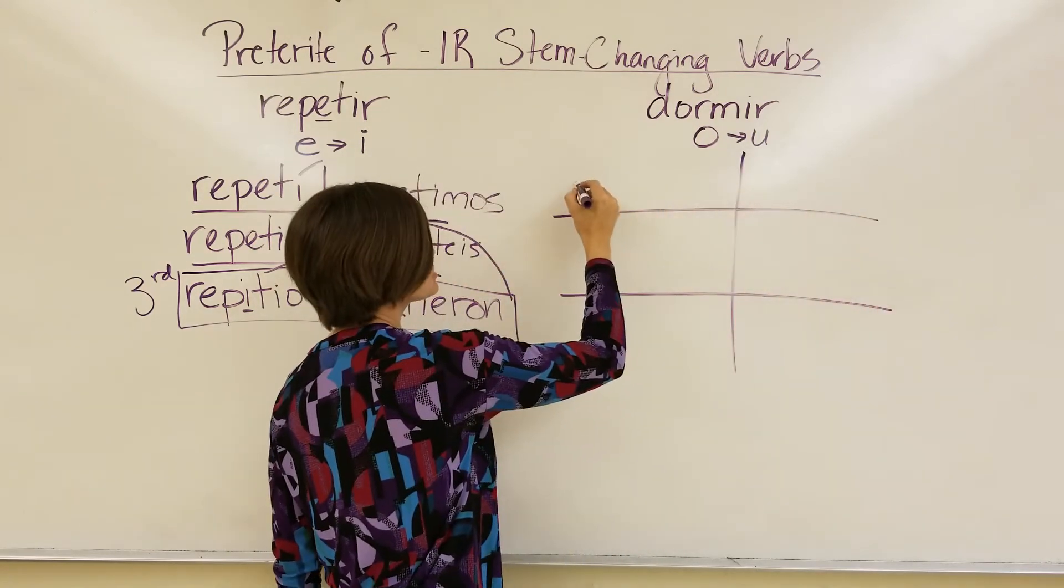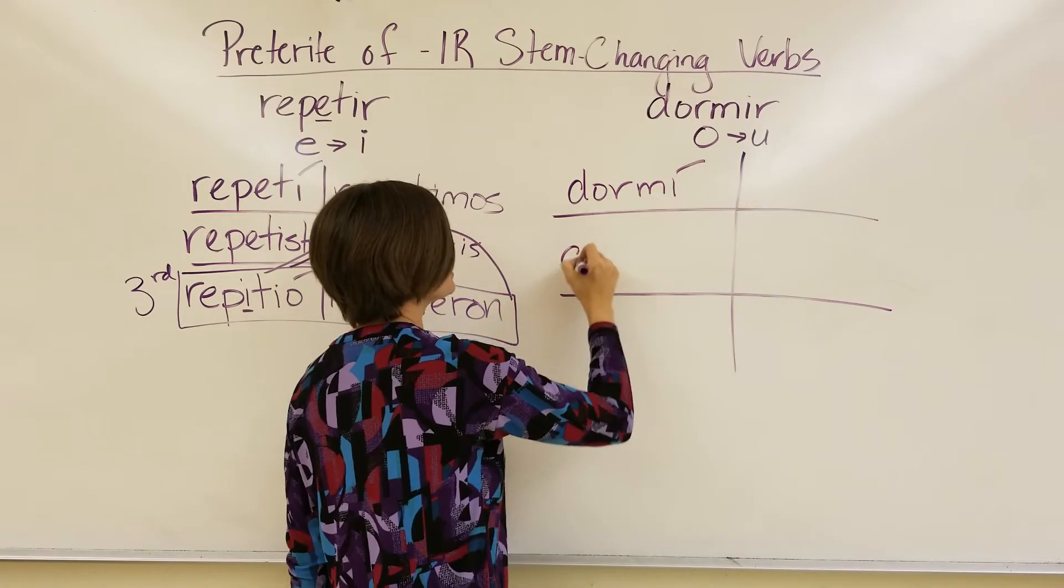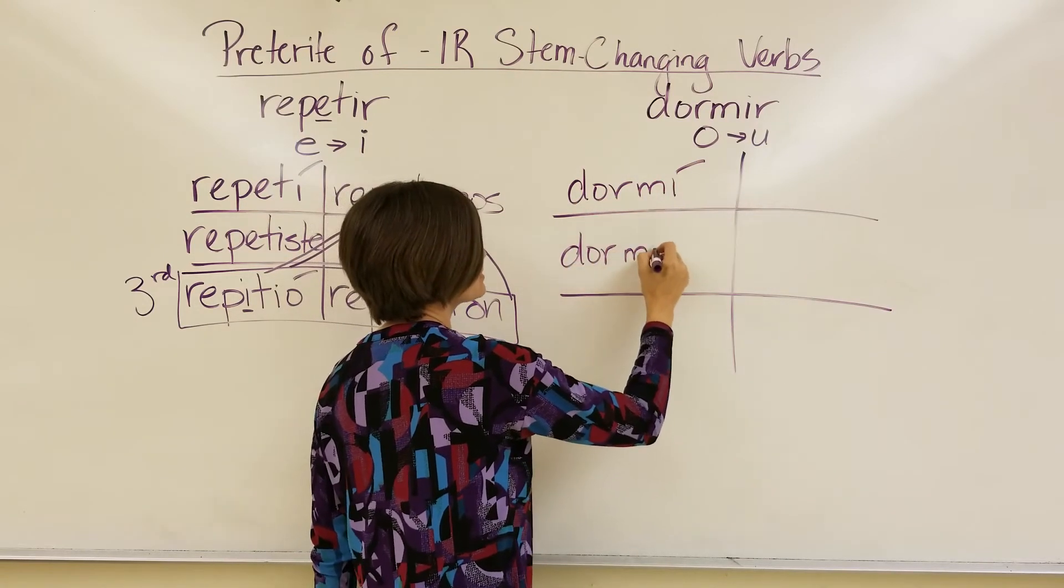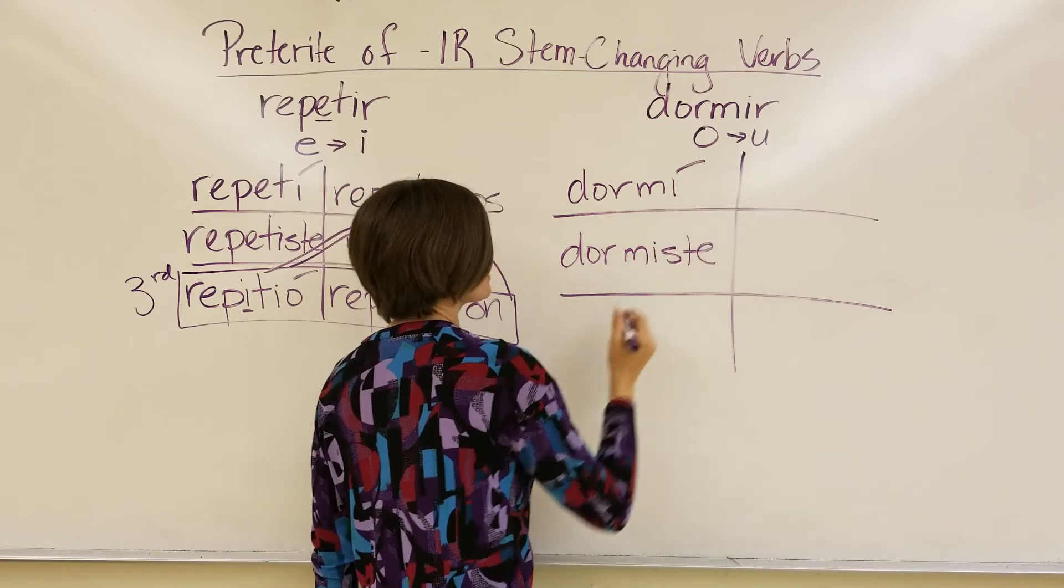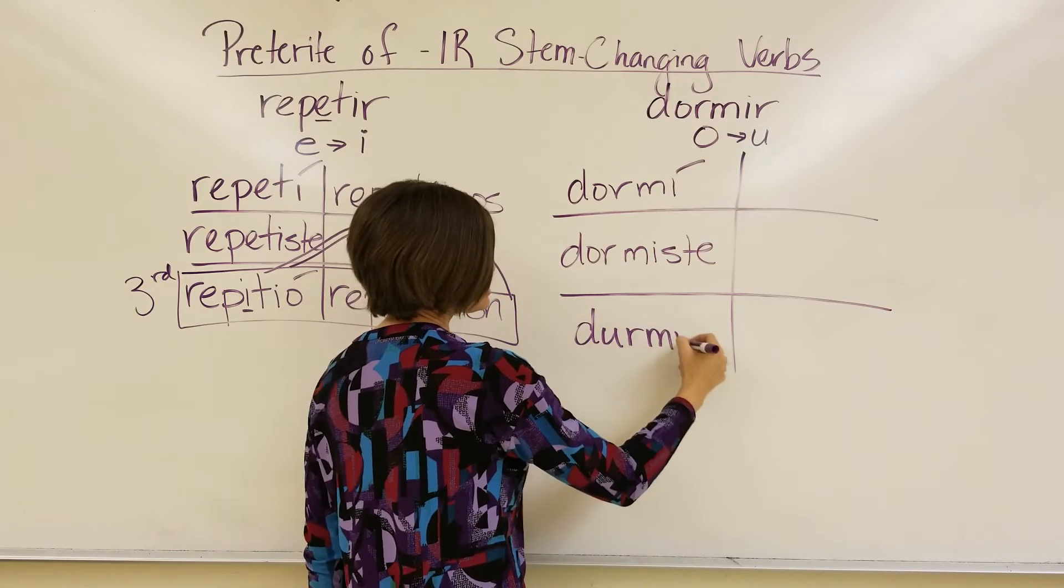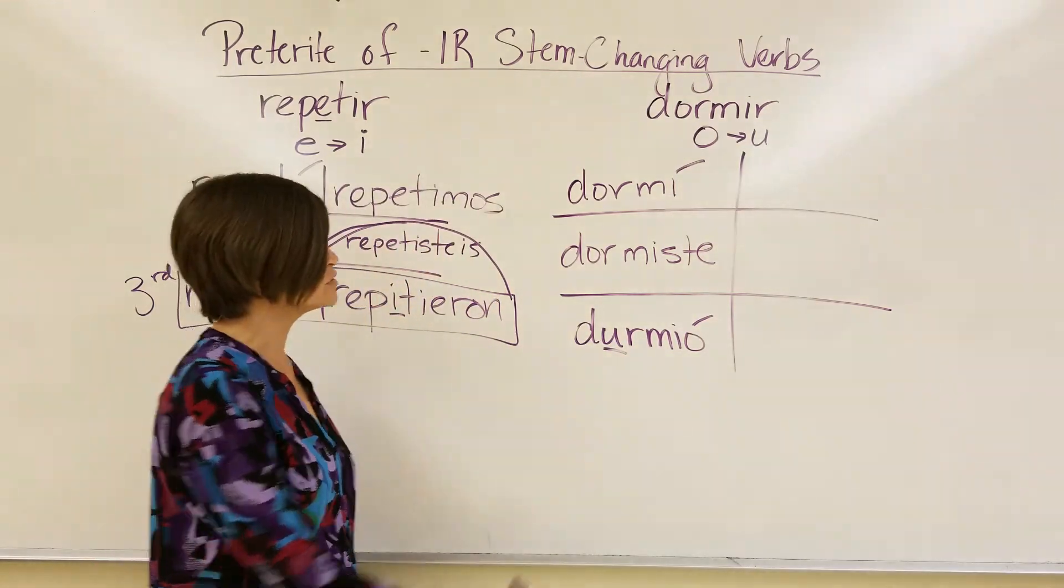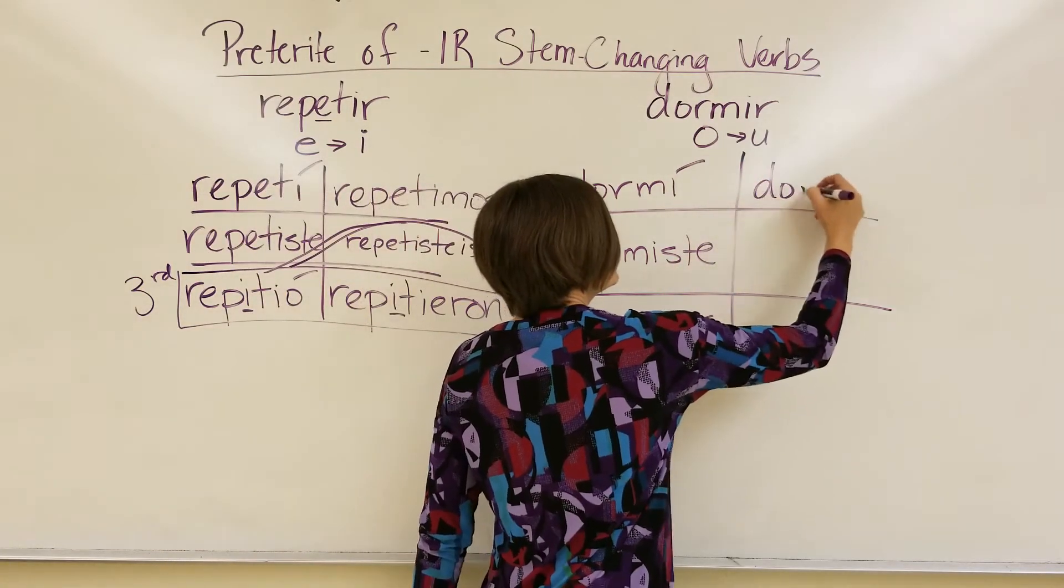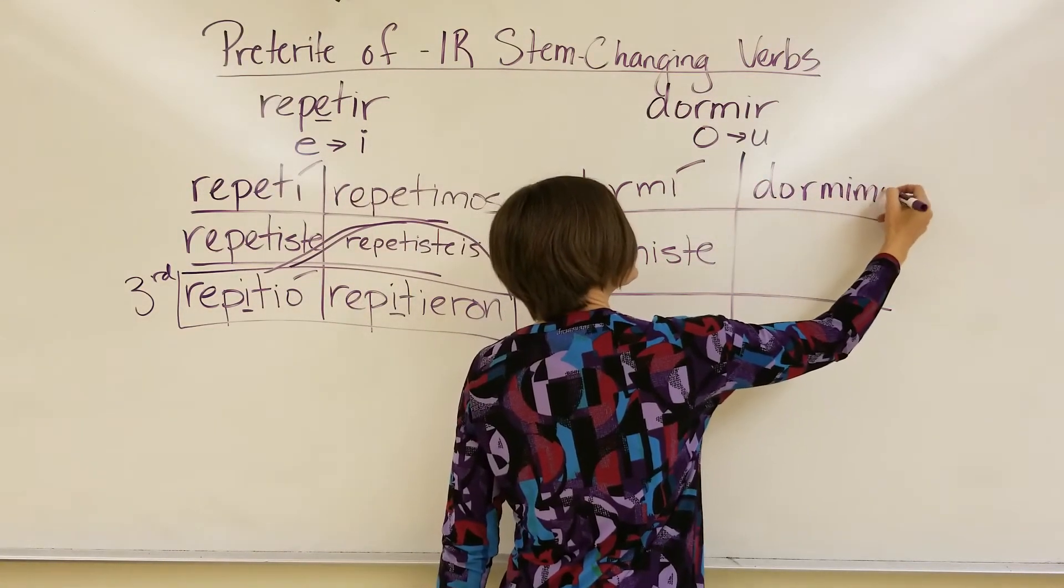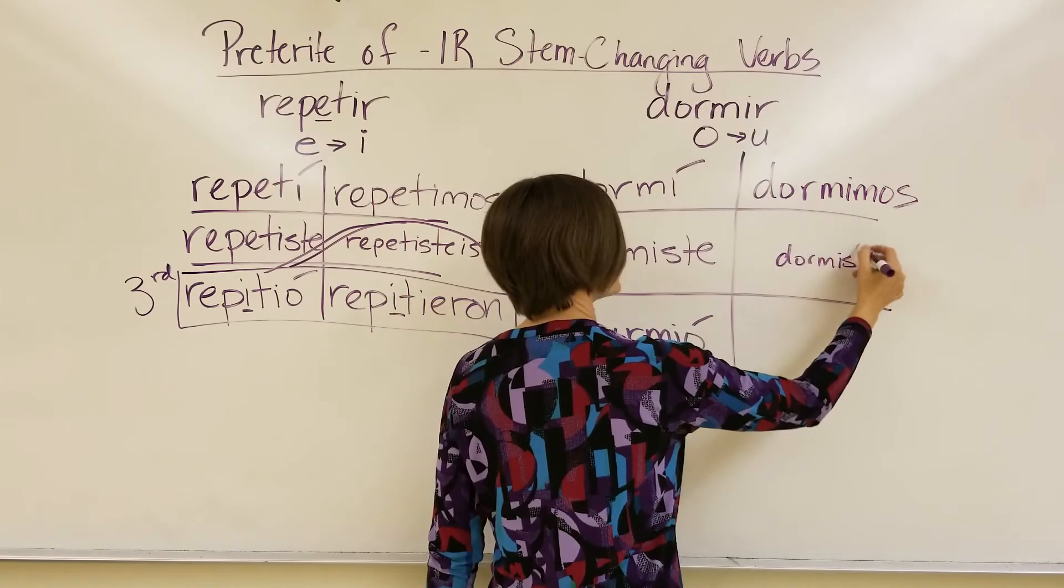Okay, so when we conjugate it, it'll be yo dormí. No problem. Tú dormiste. Then, if she slept, the O will change to a U, down at the bottom. So, durmió. Dormimos. And durmieron.